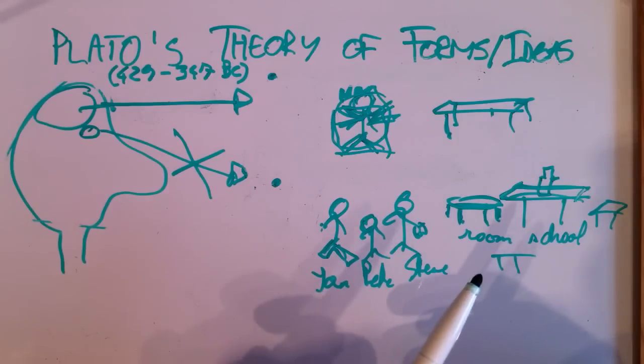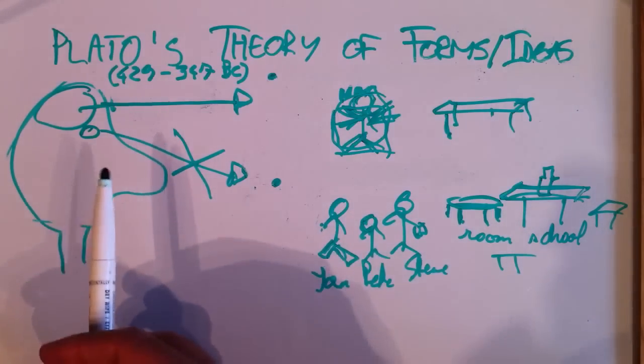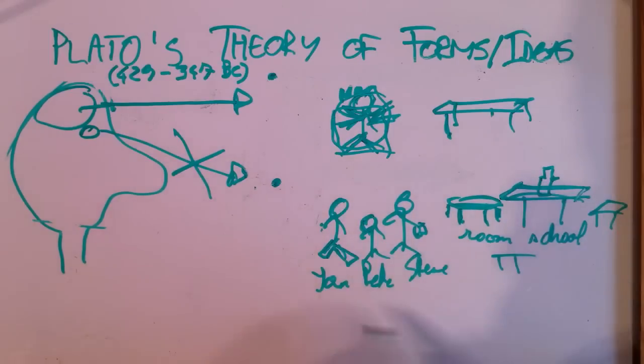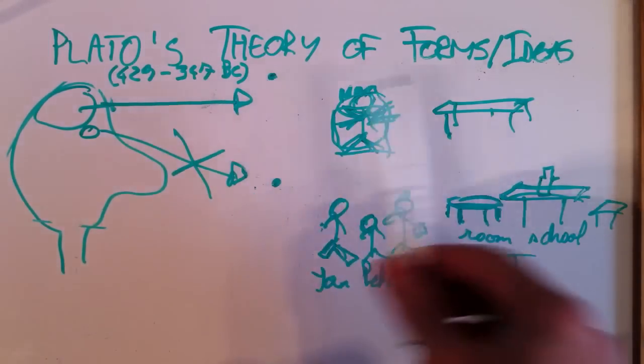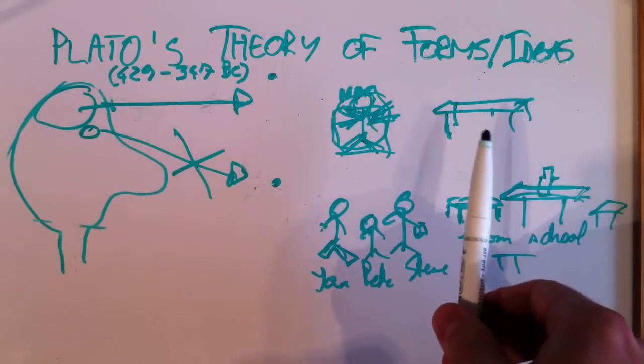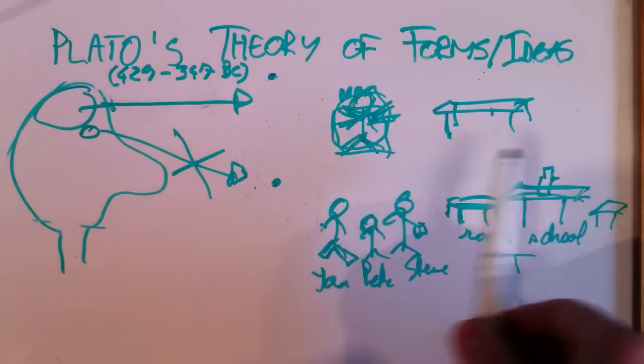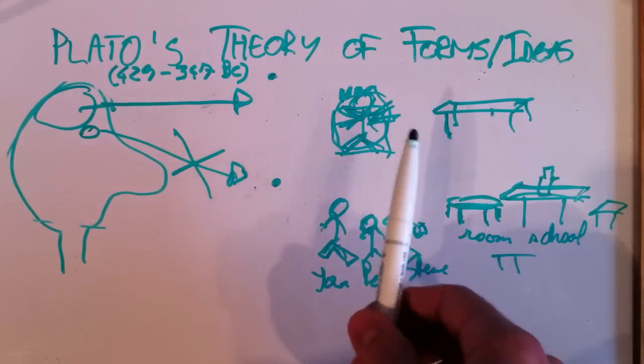And the problem kind of was, well, what we see is this stuff, the concrete specific stuff, the particulars, but these universals, we don't really see them. And yet knowledge seems to be about the general. So what is this?